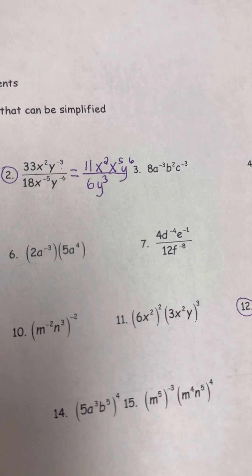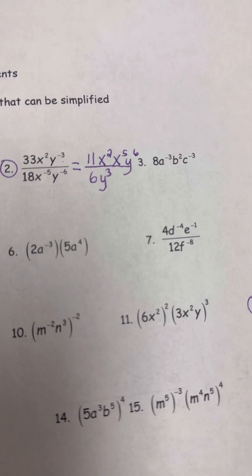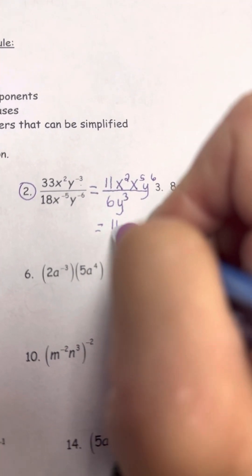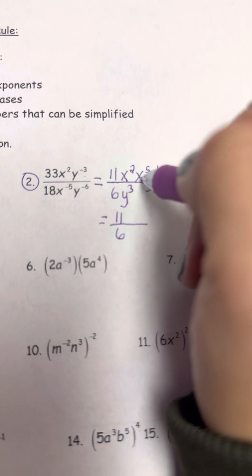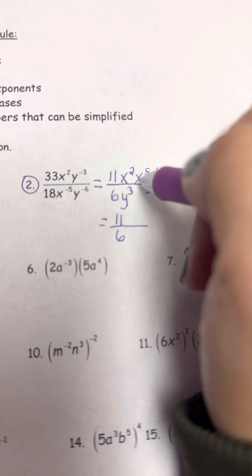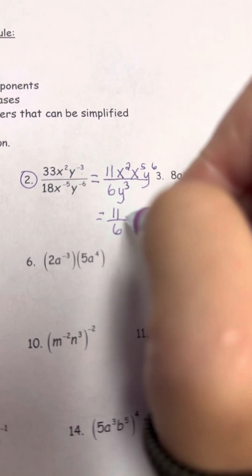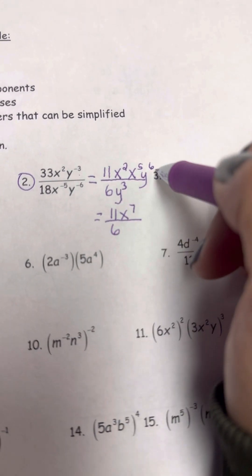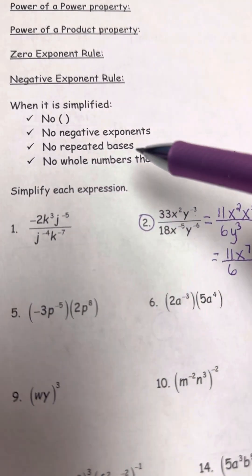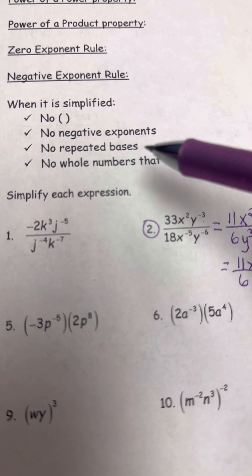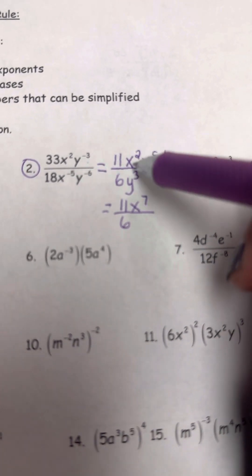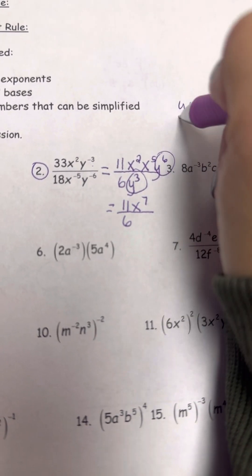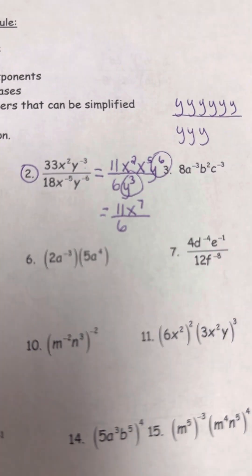Now all I did was reduce the whole numbers and get rid of negative exponents, but I still have work to do. The 11 over 6 stays. Using the Product of Powers property — the base x is written more than once — I add the exponents: x squared and x to the fifth gives me x to the seventh. The y's still need to be combined; think of it as six y's in the numerator and three y's in the denominator.